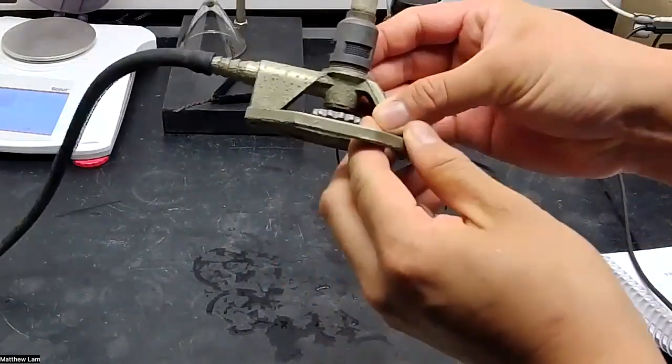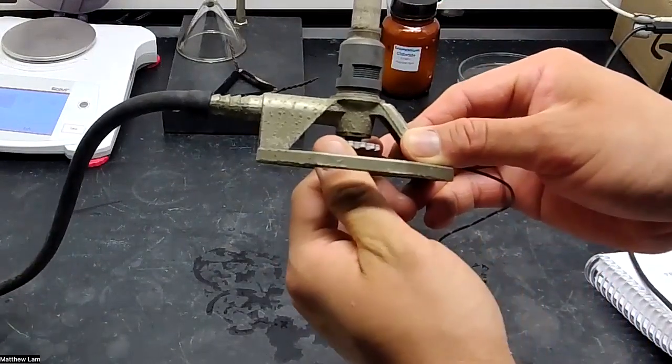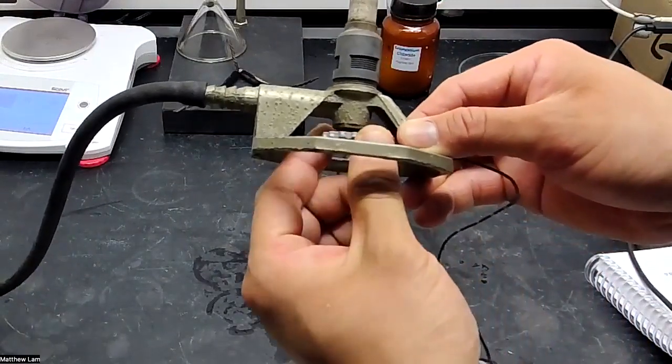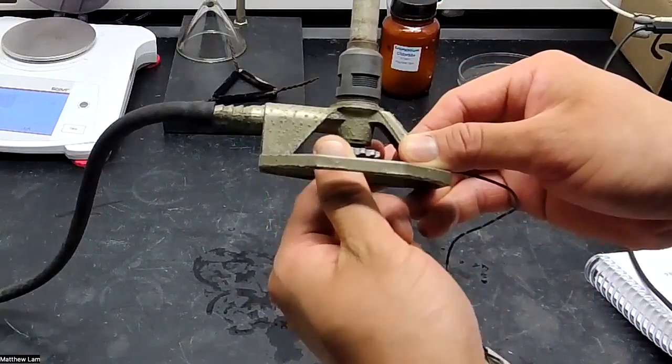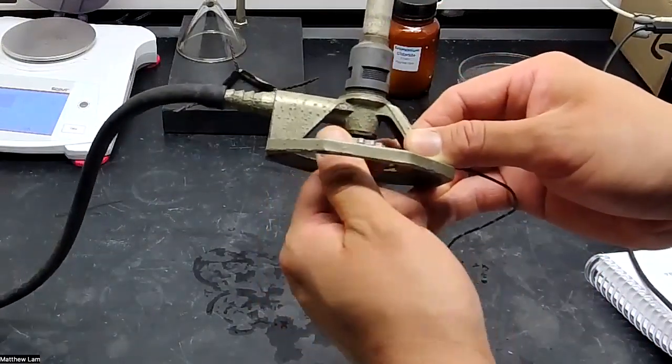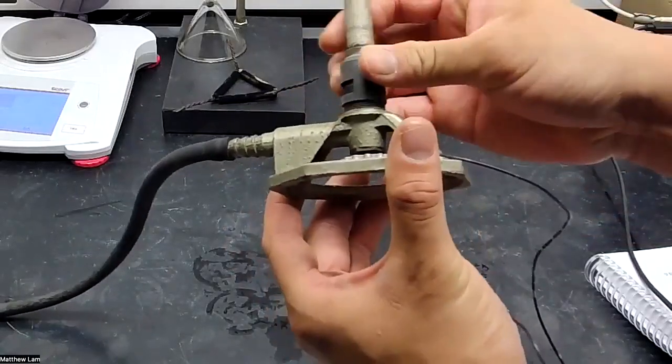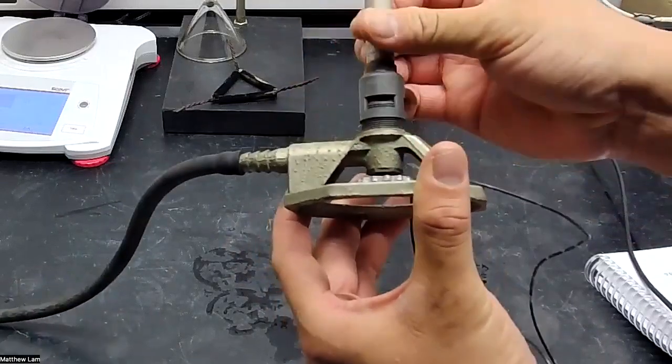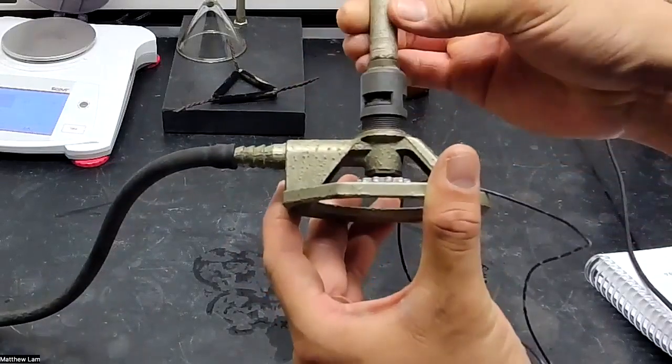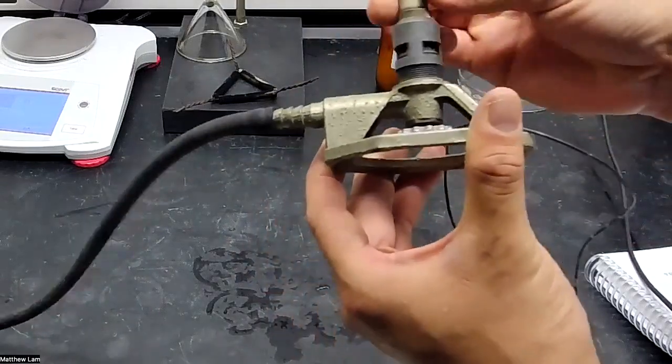Now, there's two functions on the Bunsen burner. As you can see here, there's a knob back down here where you can control the amount of gas that comes into the Bunsen burner. If you turn this, it can increase or decrease the flame. Here, we'll increase the amount of oxygen that is introduced to the Bunsen burner.